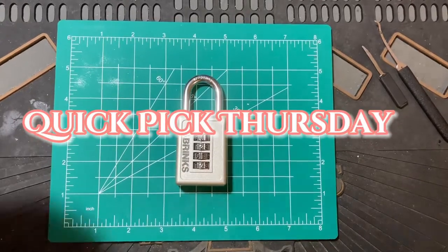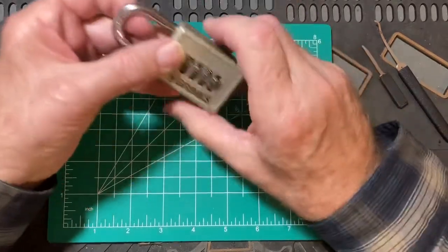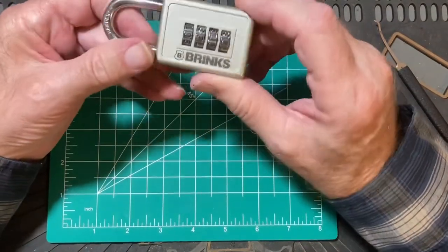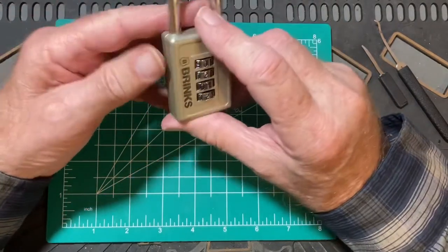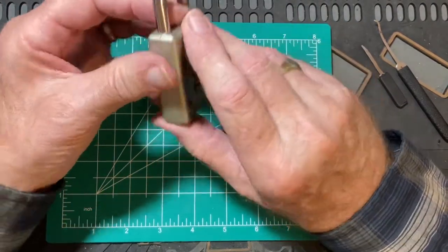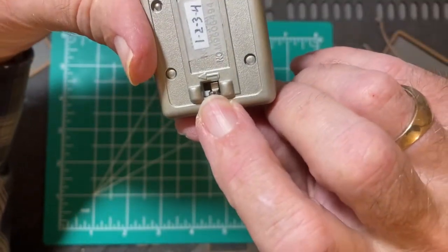Today is Quick Pick Thursday and what I have is a Brinks resettable combination padlock. Four wheels and it's resettable with this little switch down here.